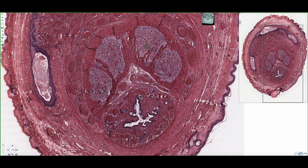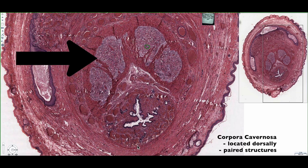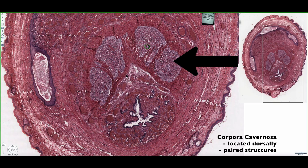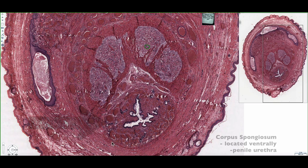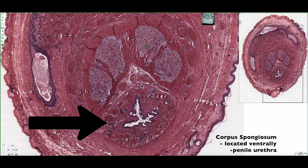This is a tissue section of a human penis. If we look at the center of the section we can see three erectile tissue masses. On the dorsal surface we'll find two paired structures — this is our corpus cavernosum — and in the midline on the ventral surface this is where we find the corpus spongiosum, which is where we're going to find our penile urethra.